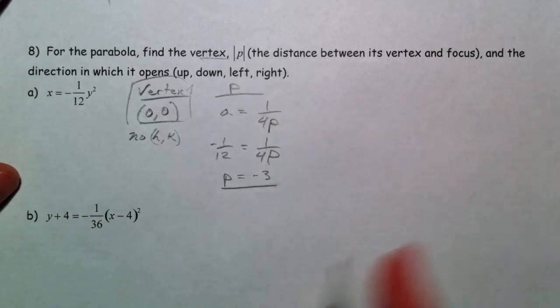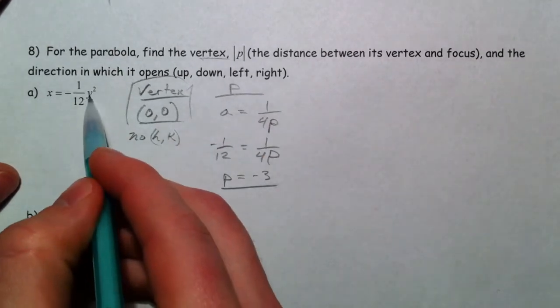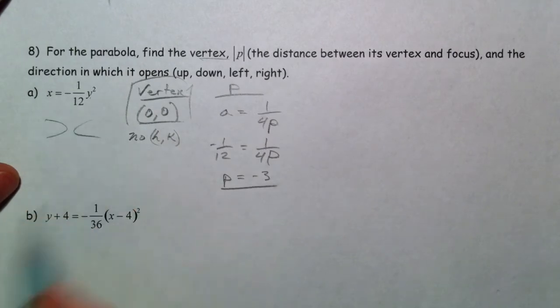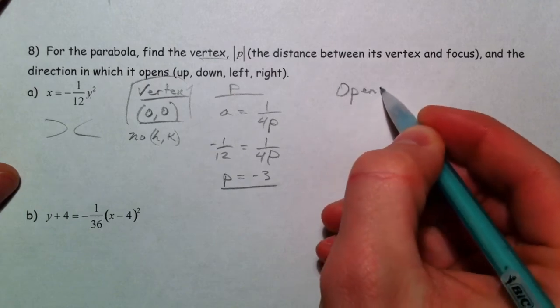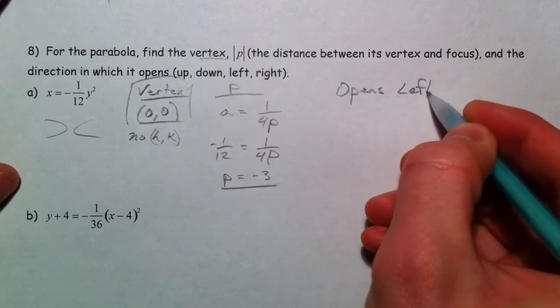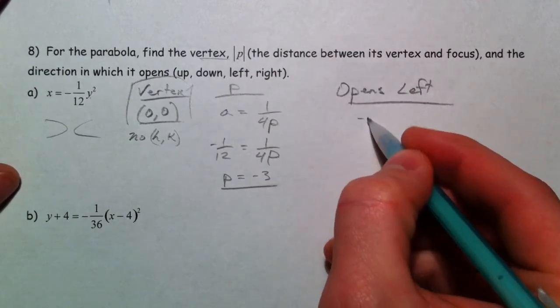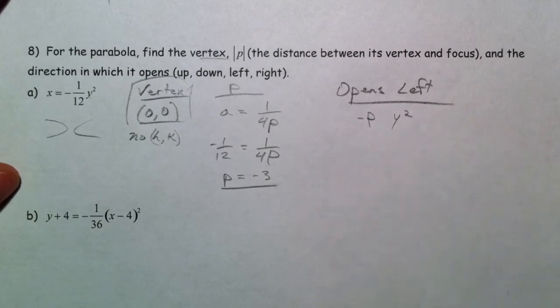Since p is negative 3, and since it's a y squared graph, which opens left or right, we know that it opens left. Because it's a negative p, y squared equation.